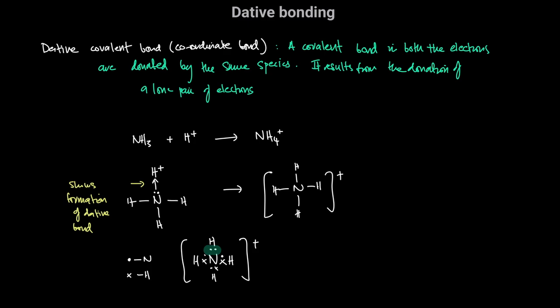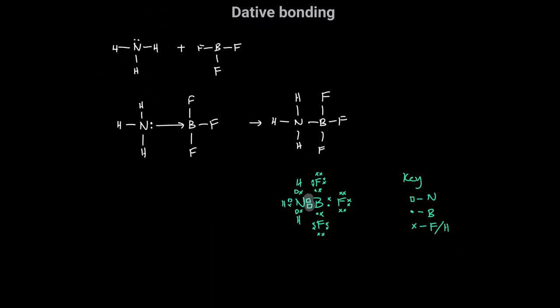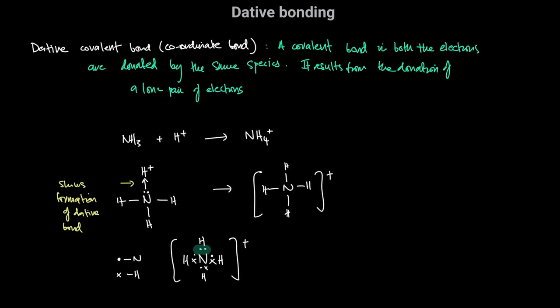The arrow shows the formation of the dative bond. The dot-and-cross diagram simply and clearly illustrates that it was indeed a single species that donated both electrons. The dot-and-cross diagram will show you whether a dative bond has been formed, because it shows both electrons came from the same species, whereas the arrow itself shows the formation of a dative bond.